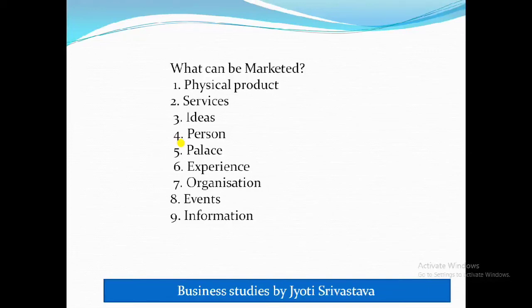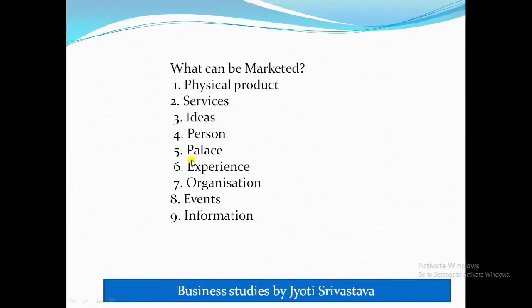Ideas can also be marketed — for example, the 'Swachh Bharat Abhiyan' is an idea that has been marketed. Persons are also marketed — during elections, candidates are marketed and voters are convinced to vote for them. Places are also marketed — tourist destinations like Agra, or the famous advertisement 'Kuch Din To Guzaariye Gujarat Mein' is an example of place marketing. Experiences are also marketed — for instance, winning a contest that gives you the experience of having lunch with a celebrity or riding in an amusement park.